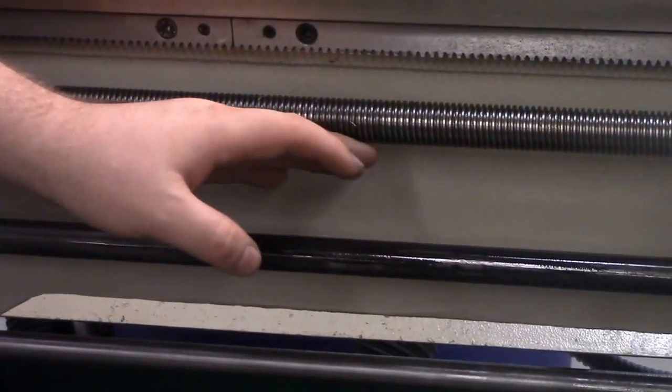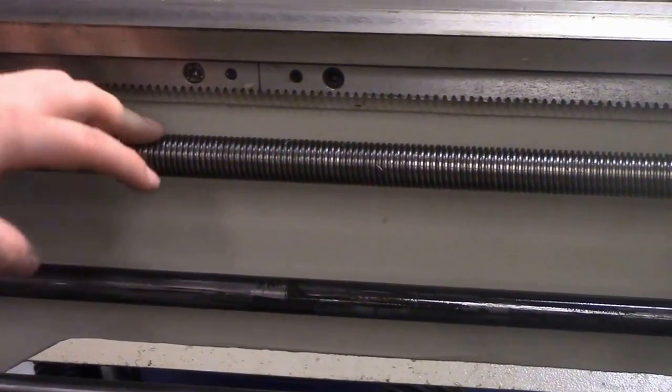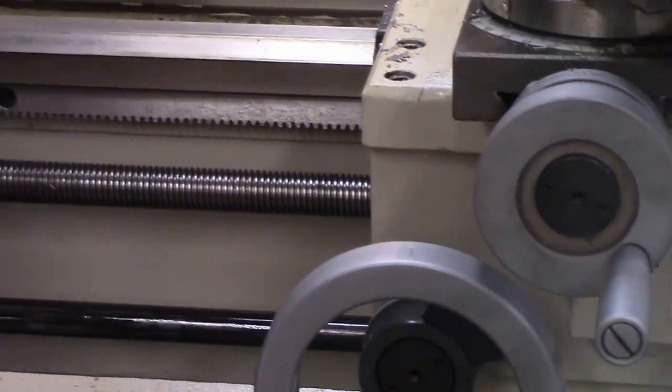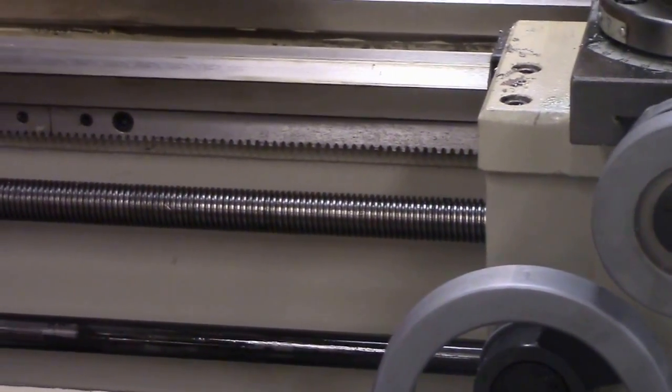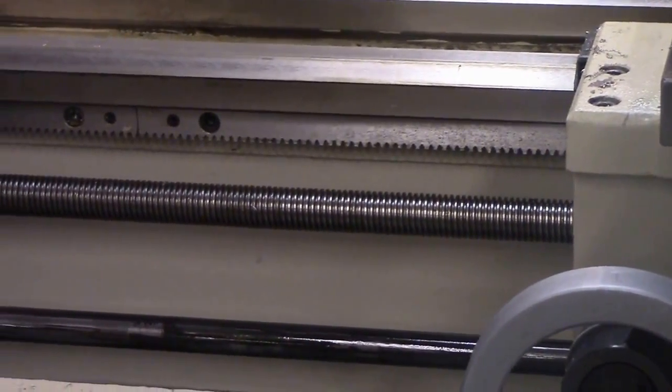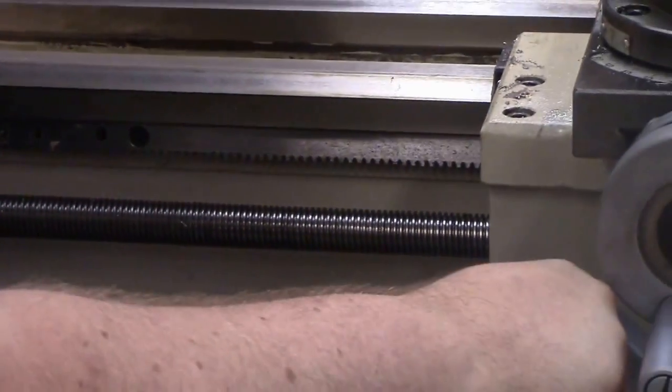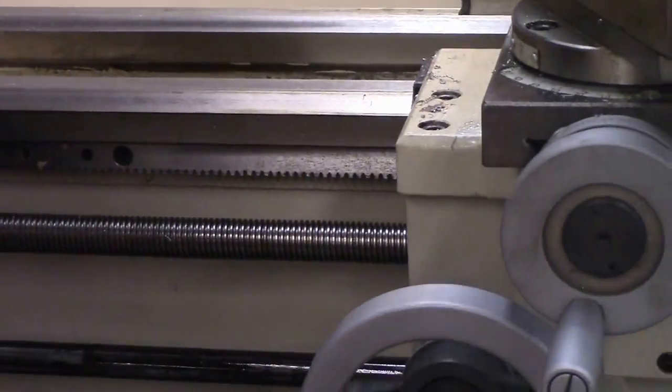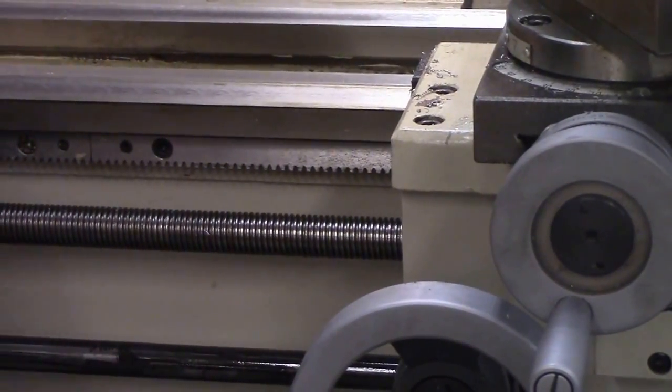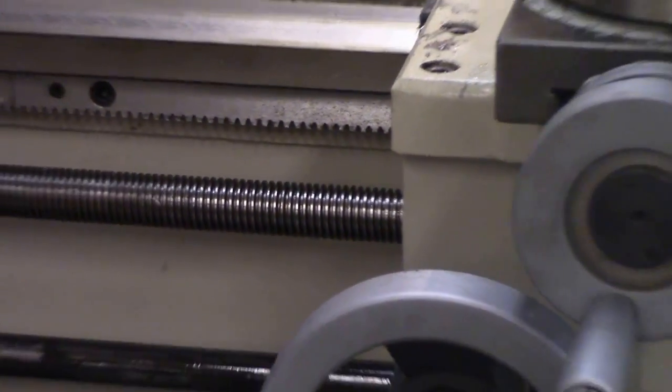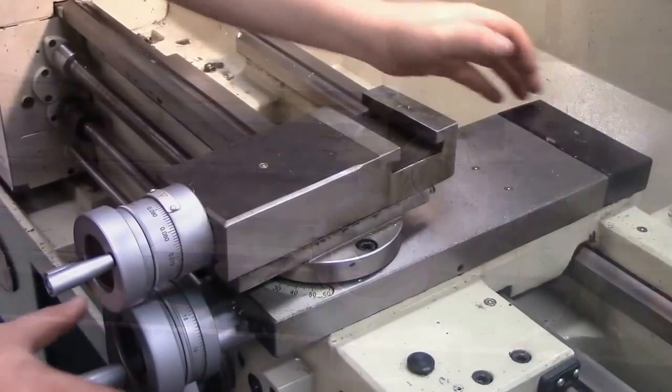The next part, this is called your lead screw. It's important because this is what controls the travel of your carriage. This is the most important piece on your lathe in a lot of ways, because a damaged lead screw can mean that you have no accuracy in the traveling of your carriage. When you don't have any accuracy, that means you don't know how close you're drilling, how close you're cutting.